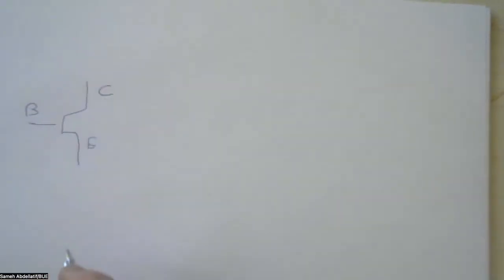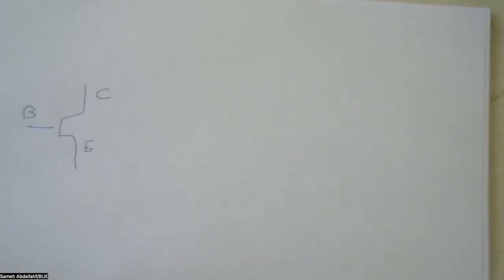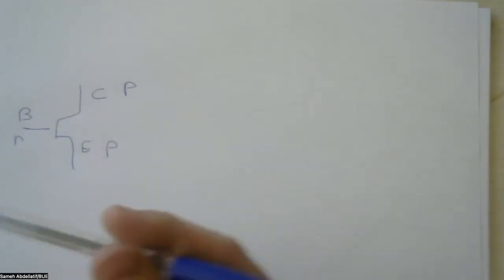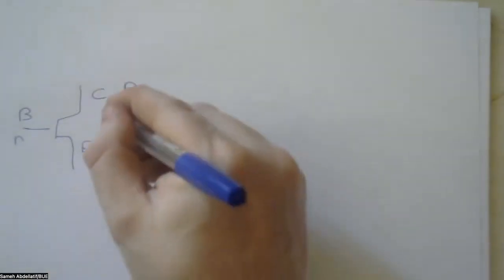Generally speaking, this schematic is based on what we call a bipolar junction transistor. A bipolar junction transistor is simply a three-terminal transistor — we have the base, the emitter, and the collector. We have two basic configurations: it can be NPN or PNP. In our case, we are using a PNP transistor. Using the terminology, this is the emitter where the carrier is emitted, and this is the collector. The motion of the holes will be in this direction.